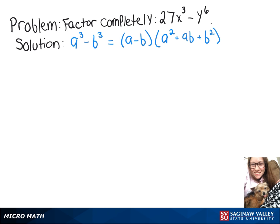In this video, we're going to factor 27x cubed minus y to the sixth, and to do that we're going to use the difference of cubes formula. We can rewrite 27x cubed minus y to the sixth as (3x) cubed minus (y squared) cubed.